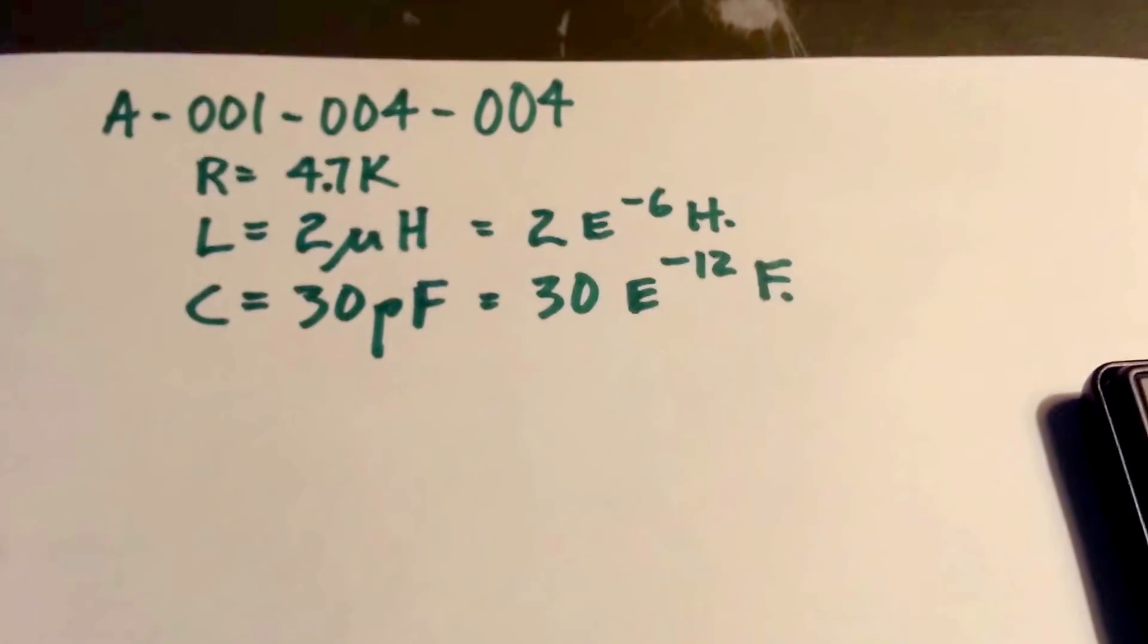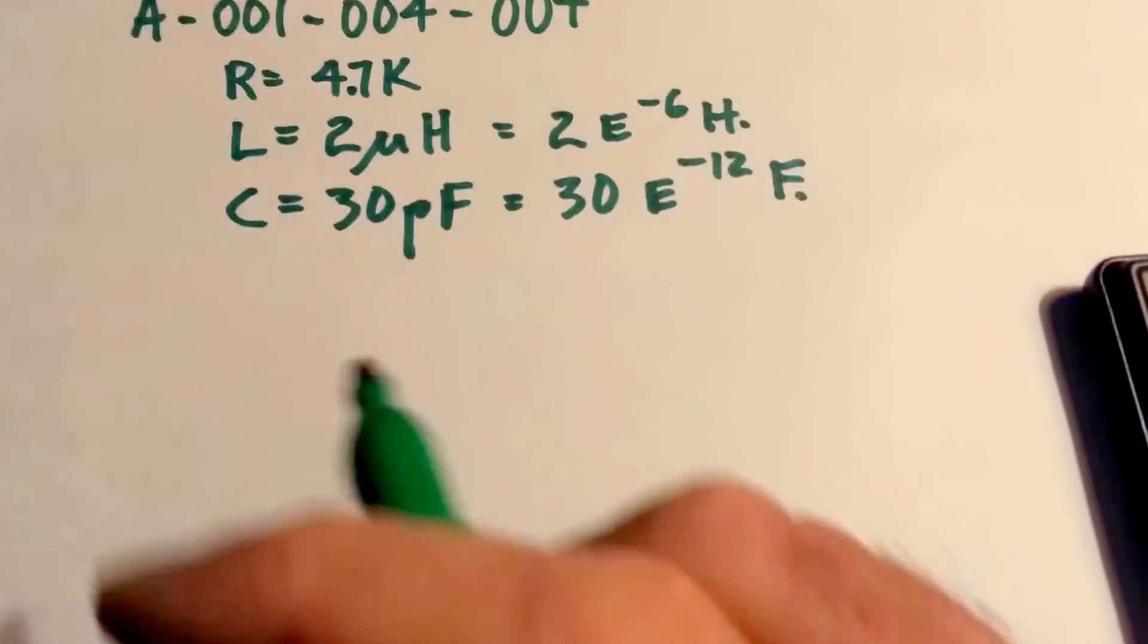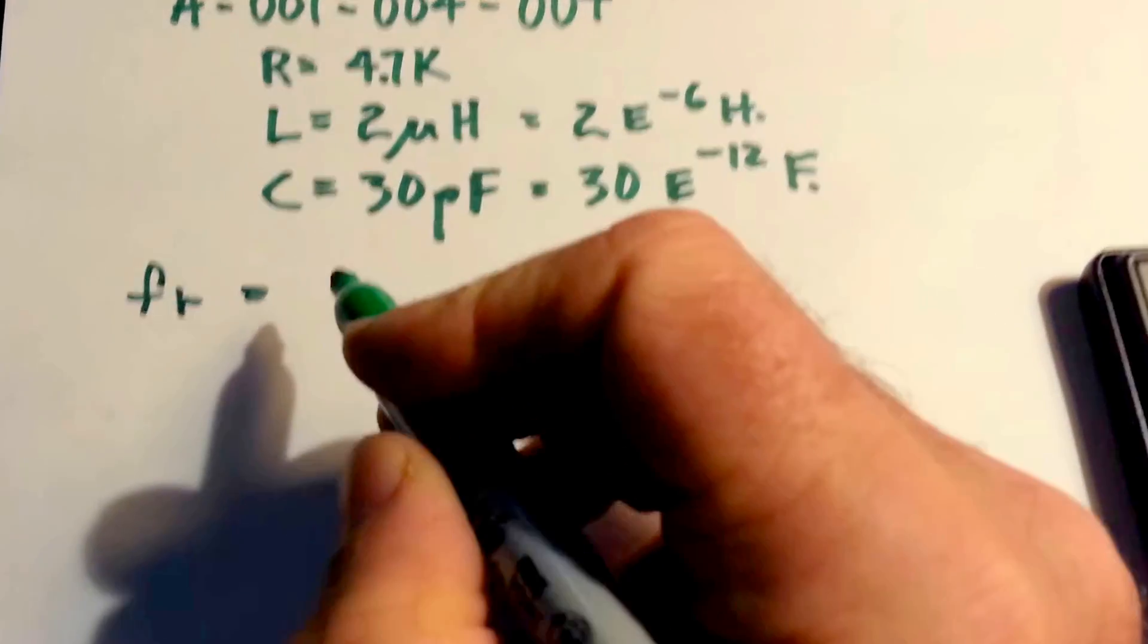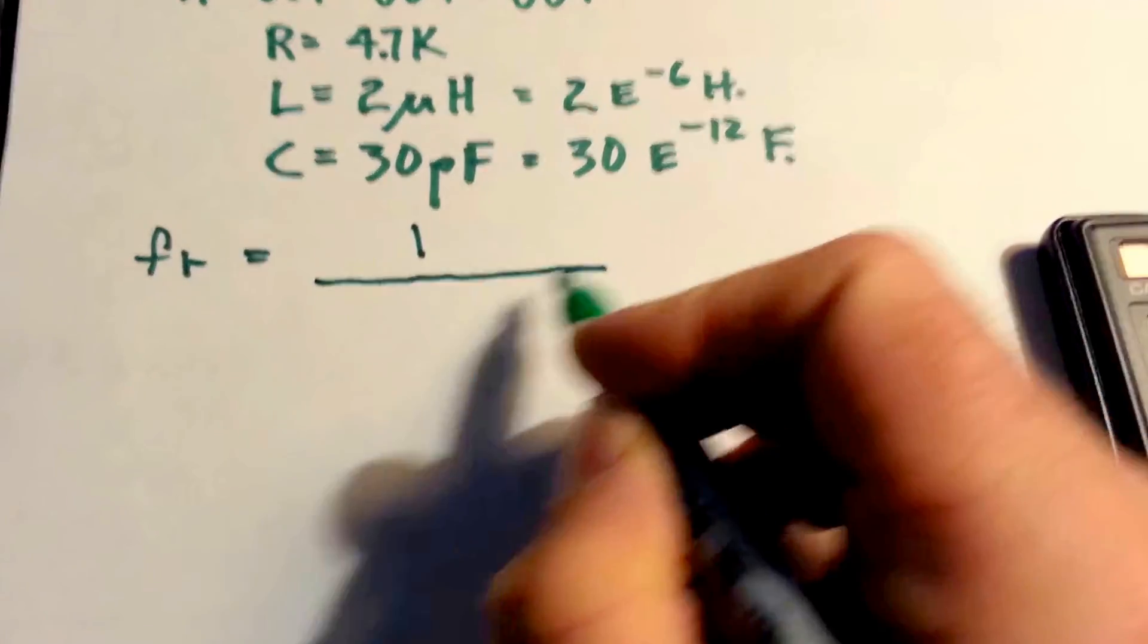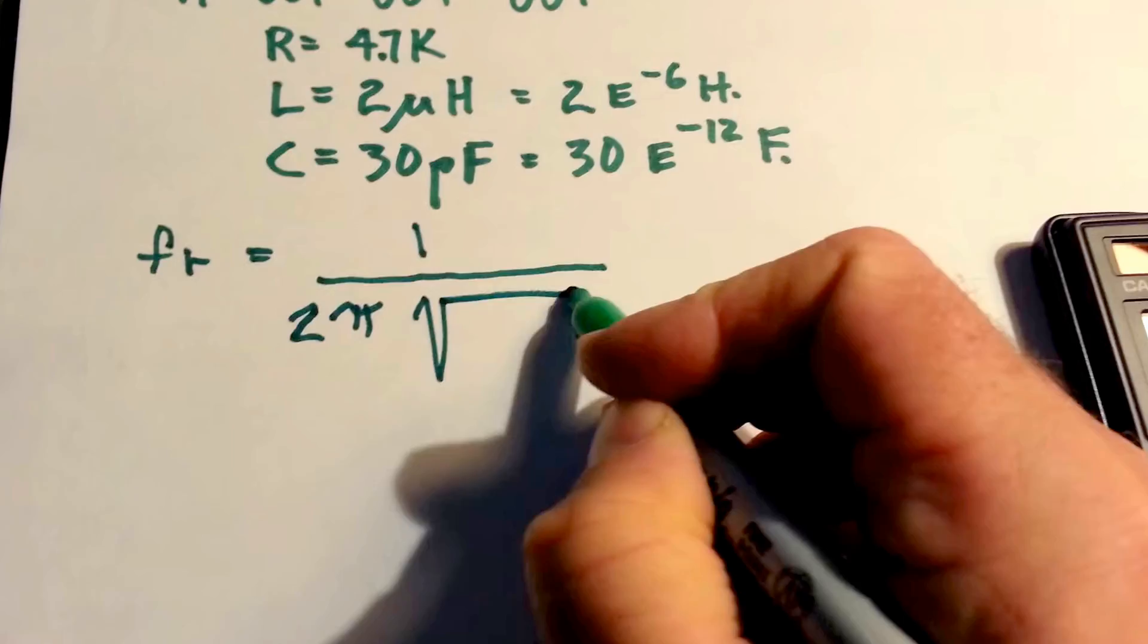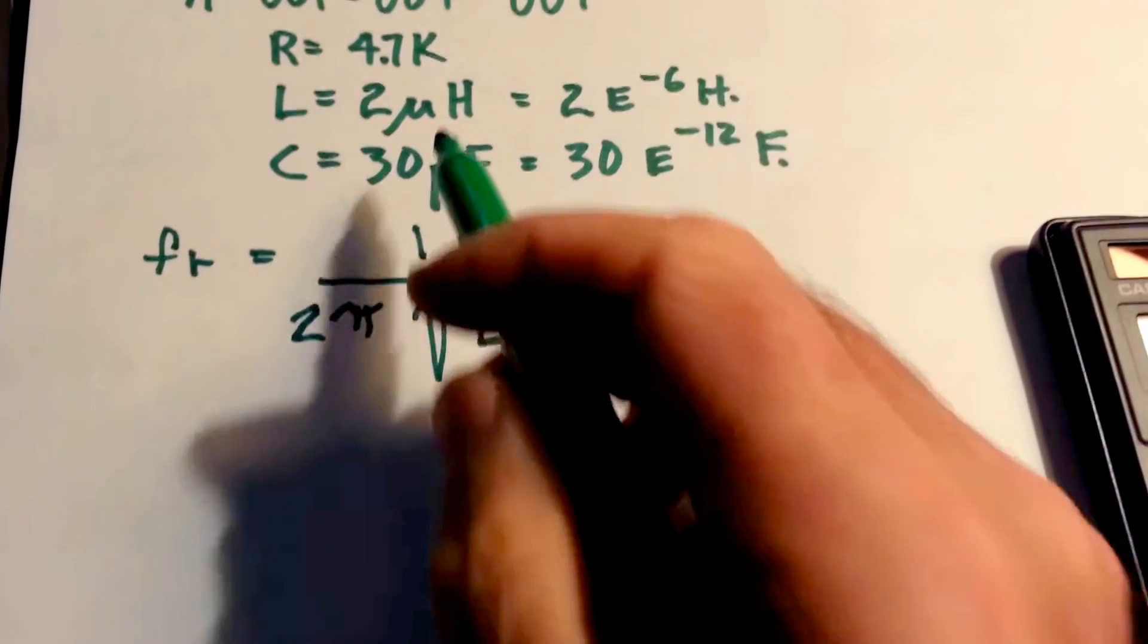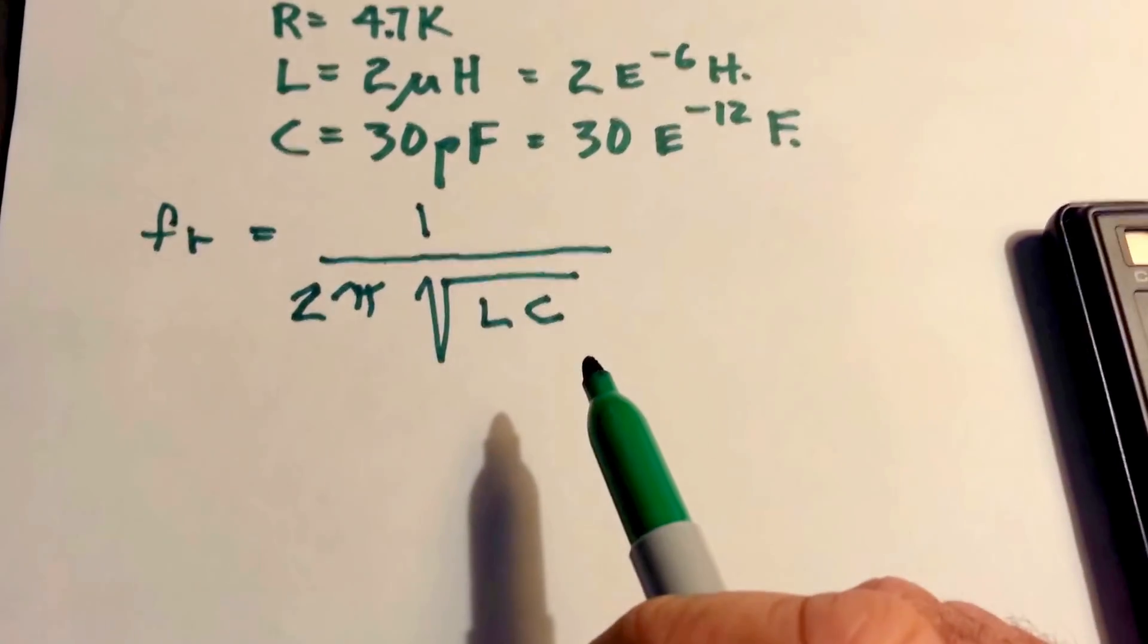I'll just put down the formula here. Not that complicated of a formula. It's resonant frequency equals 1 over 2 pi times the square root of LC. L is the inductance, 2 microhenries. C is the capacitance, 30 picofarads.